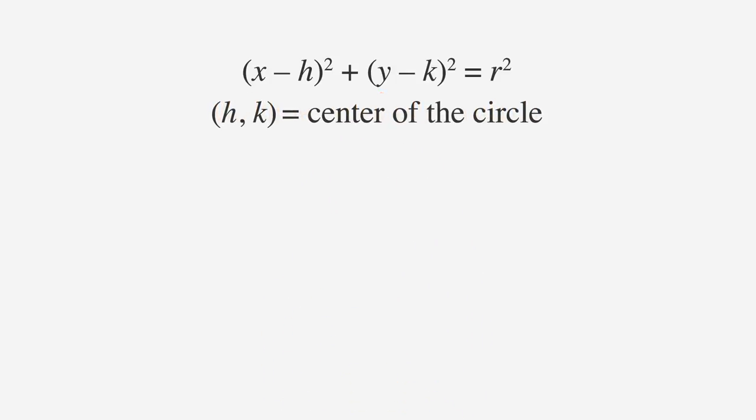So if we had the equation x minus 3 squared plus y minus 2 squared equals 4, then we know that we would have a circle with a radius of 2, with a center at the point 3,2.